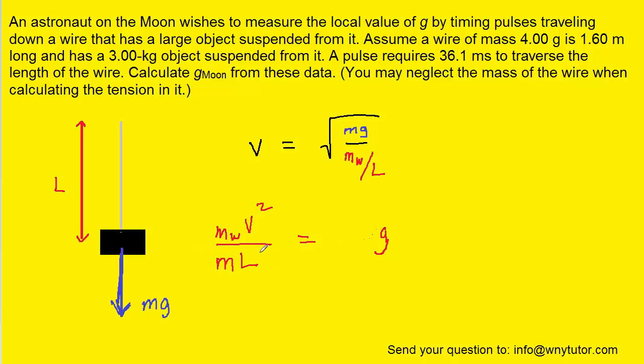Now we're almost ready to plug in all the known values. We just have to come up with an expression for v, which is the speed of the pulse as it travels down the wire. And the question notes that it takes 36.1 milliseconds to travel the entire length of the wire. So we can come off here on the side. We know that speed is equal to a distance divided by a time. In this case, the distance would be the length of the string, and then the time will be that 36.1 milliseconds. So for v, we can substitute in the expression L over t.